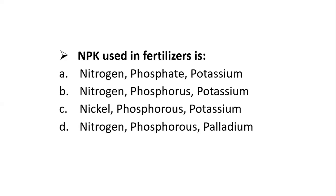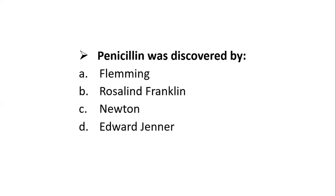NPK used in fertilizers stands for: nitrogen, phosphate and potassium; nitrogen, phosphorus and potassium; nickel, phosphorus and potassium; or nitrogen, phosphorus and palladium. The correct answer is option B — nitrogen, phosphorus and potassium. Penicillin was discovered by: Fleming, Rosalind Franklin, Newton, or Edward Jenner. The correct answer is Fleming.